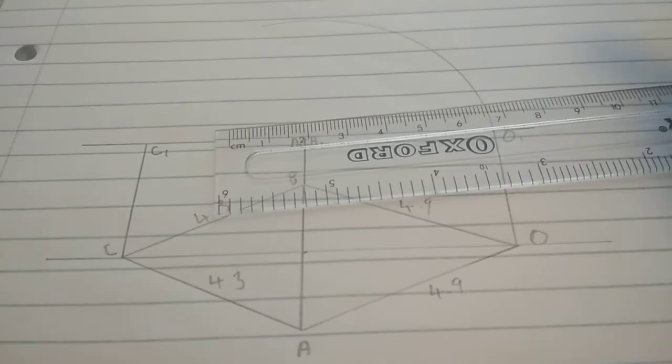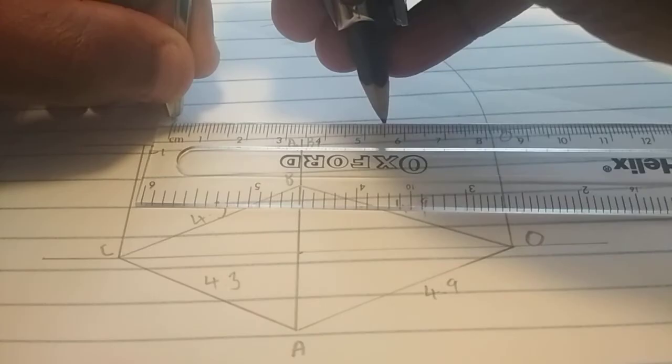So, we need to draw this leg, the third leg now, which is at 5.5. So, what we're going to do, we're going to measure 5.5 on our compass. Just like that.